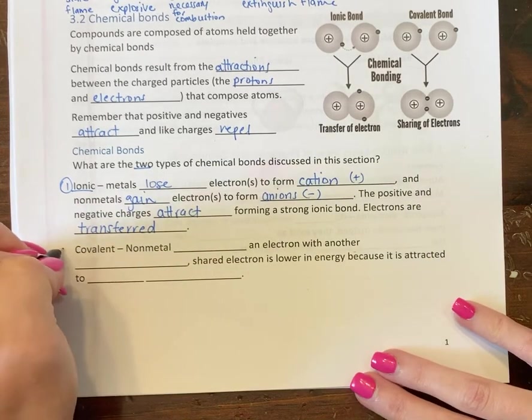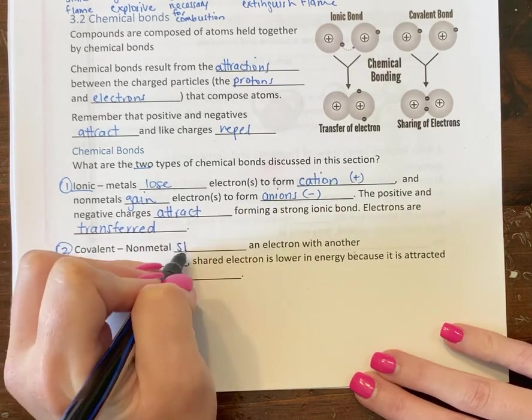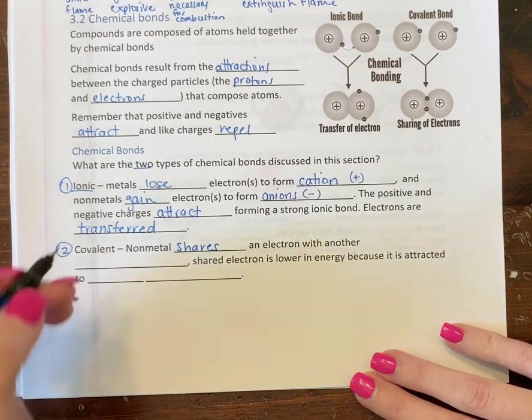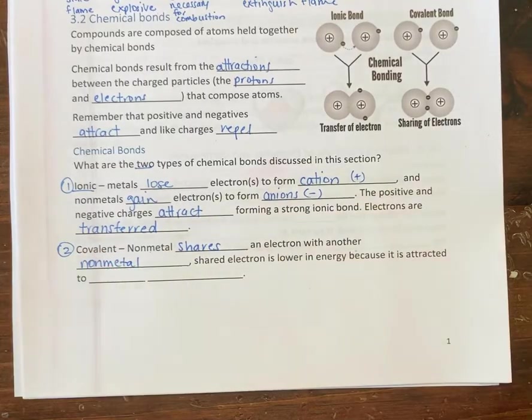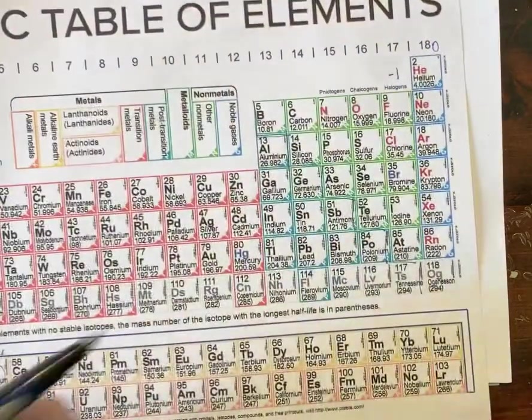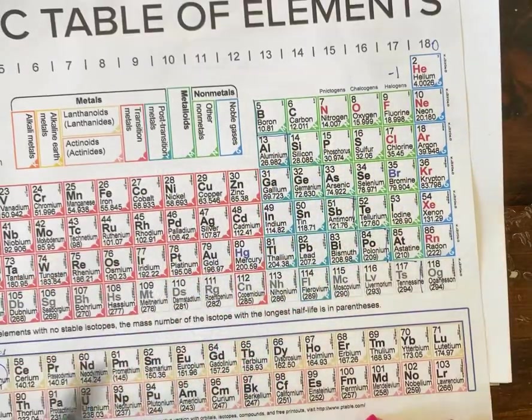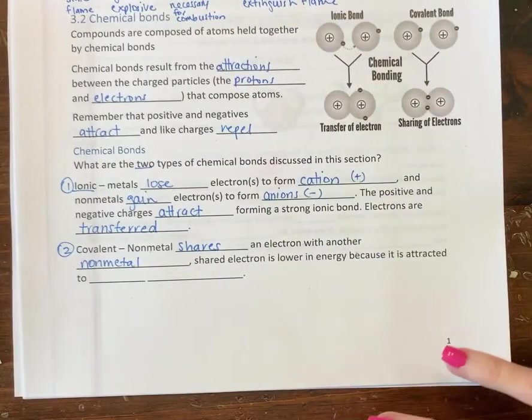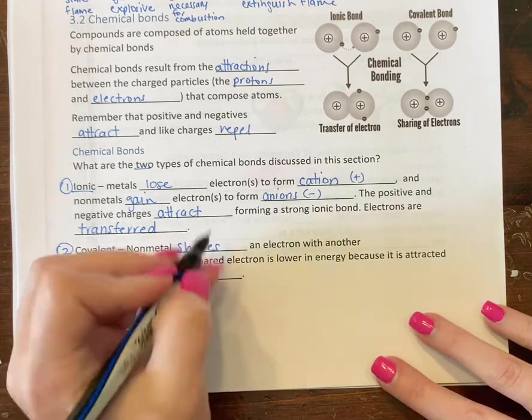The second type of bond we'll talk about are covalent bonds. This happens when you have a non-metal and it shares one or more electrons with another non-metal. So the important thing to remember here: covalent bonds are non-metals with non-metals, ionic bonds metal plus non-metal. That'll help you remember it when you're reviewing.